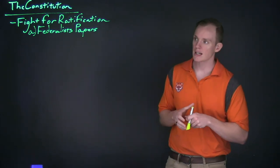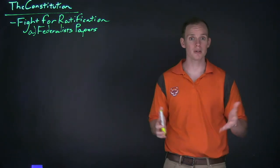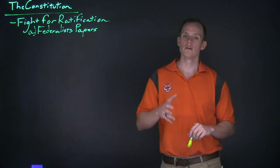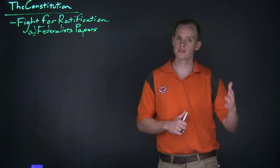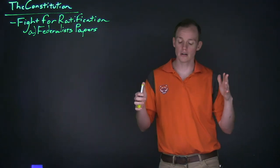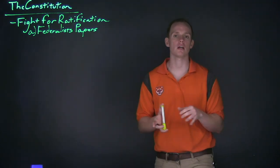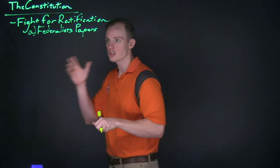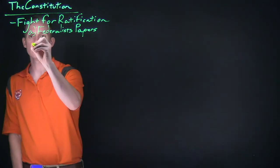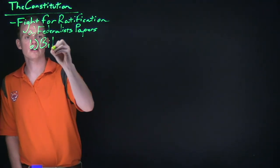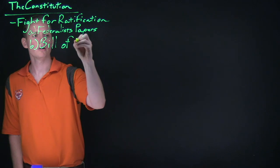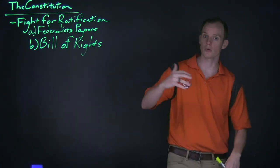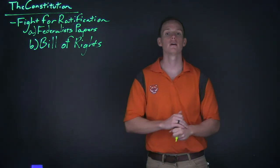By the summer of 1788, ratification was complete and the Constitution went into effect. Virginia and New York were initially excluded, but when James Madison and other Federalists agreed to the idea of potentially creating a Bill of Rights, this convinced New York and Virginia to adopt the Constitution, legitimizing it and creating a new nation. The Bill of Rights would not be created until the following year, but it would basically outline the basic rights of Americans as individuals — giving you the right to free speech, the right to bear arms, and so on.